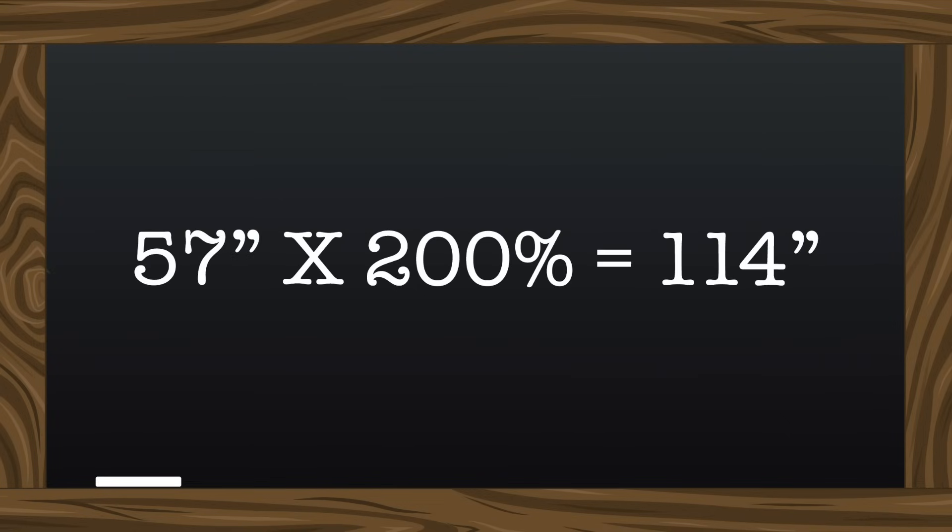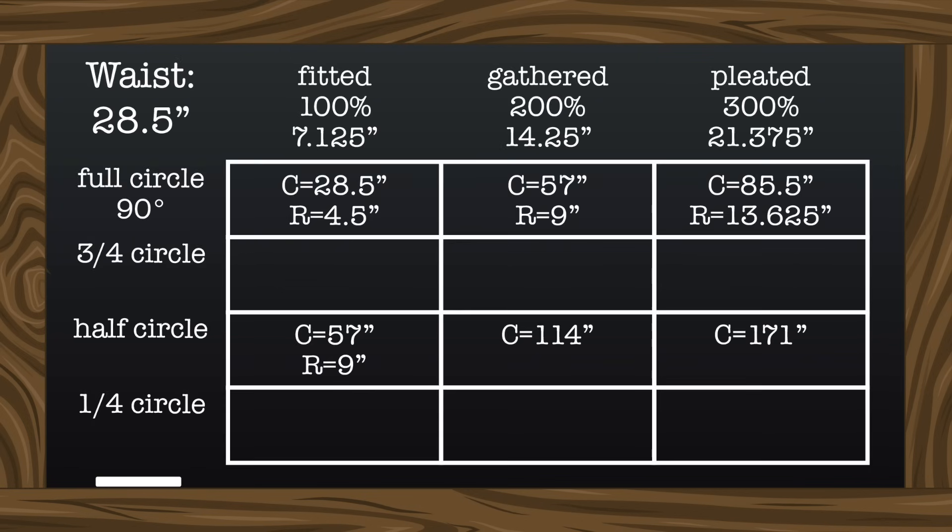For the gathered skirt we need to double 57, giving us 114, and for the pleated skirt we need to triple it, giving us 171. The radii of those are 18.125 and 27.25.